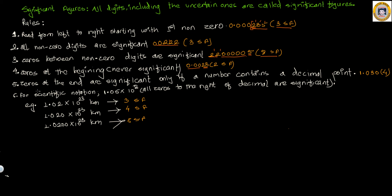Rule five: zeros at the end are significant only if the number contains a decimal point. So if a number contains a decimal point, the trailing zeros will count. In this example there is a decimal point, so those two trailing zeros also count — therefore the significant figure count is 1, 2, 3, 4: four significant figures.